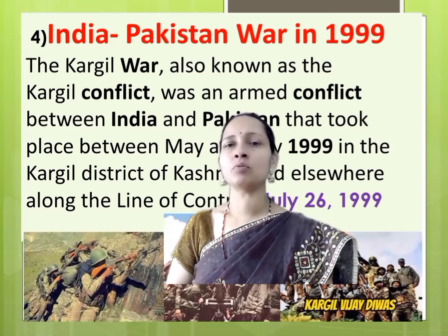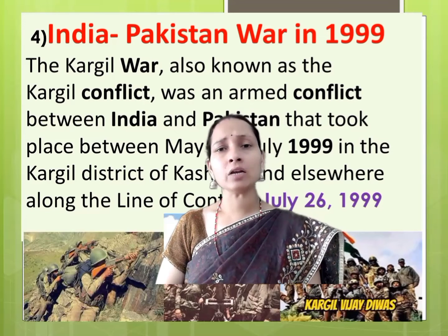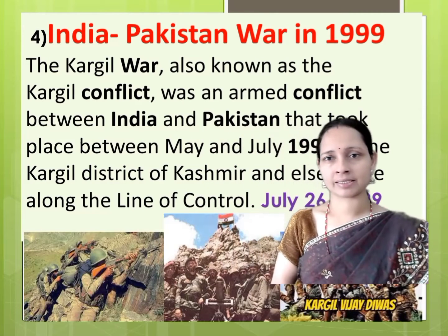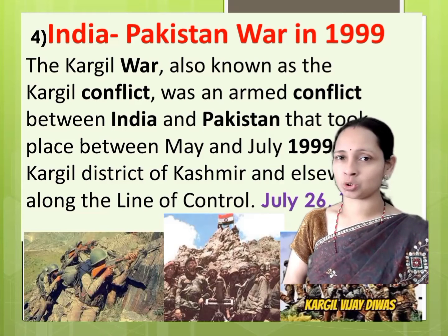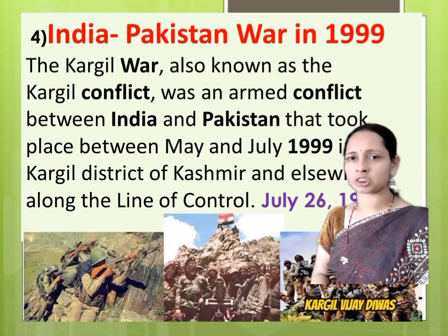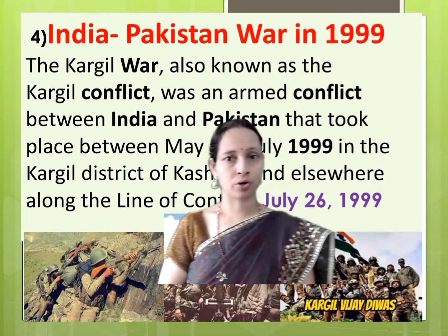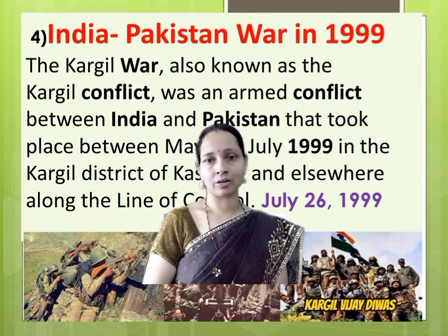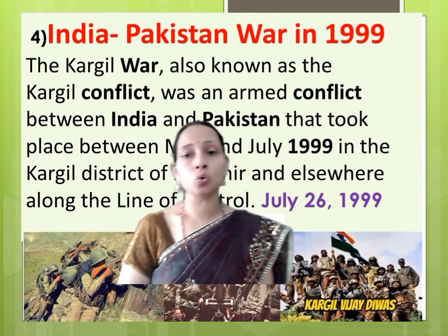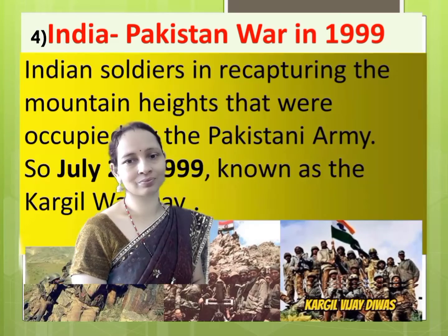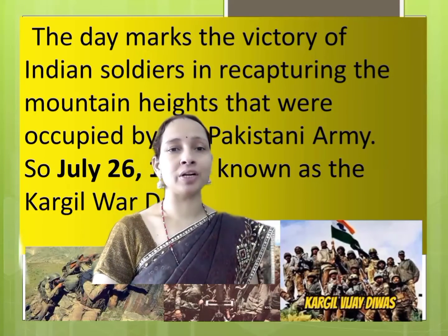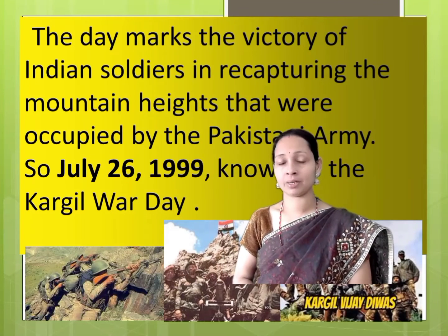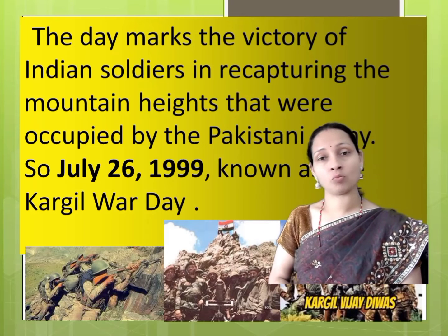Fourth war: India-Pakistan war in 1999, the Kargil War, also known as the Kargil conflict, was an armed conflict between India and Pakistan that took place between May and July 1999, in the Kargil district of Kashmir and elsewhere along the Line of Control. July 26, 1999 is an important day. Here I have shared some images related to Kargil Vijay Divas. The day marks the victory of Indian soldiers in recapturing the mountain heights that were occupied by the Pakistani army. July 26, 1999 is known as Kargil Vijay Day, and today also we celebrate July 26th as Kargil Vijay Day.